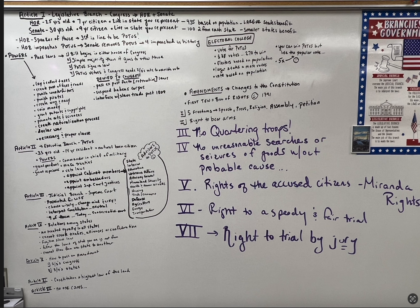The Third Amendment says no quartering troops in people's homes during a time of peace. Remember the American Revolution? You can't quarter troops in someone's house — it's not okay. The Fourth Amendment: no unreasonable searches or seizures without probable cause. You must have a warrant and probable cause — a reason to go into someone's car, house, or search them. If there's no probable cause, no reason, or no warrant, you can't go through their stuff.